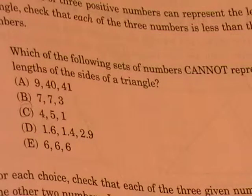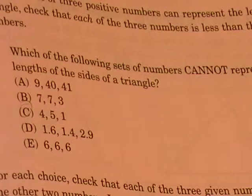This problem deals with testing three numbers as possible triangle side lengths, and the question reads, which of the following sets of numbers cannot represent the lengths of the sides of a triangle? And the options are there, A through E.